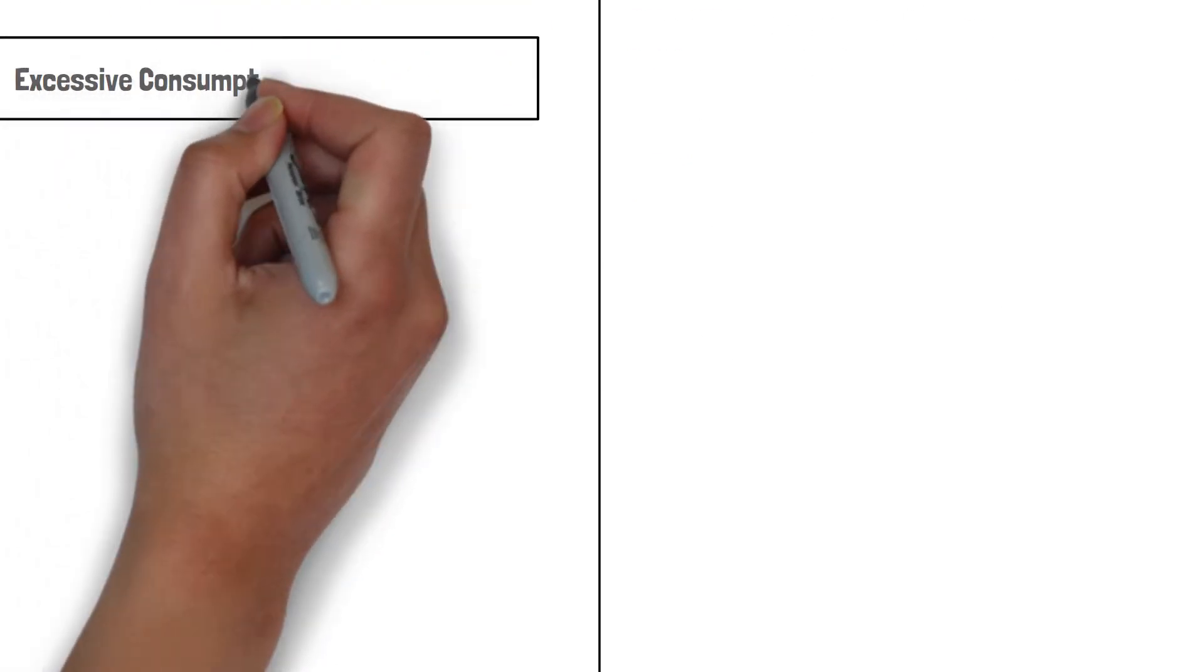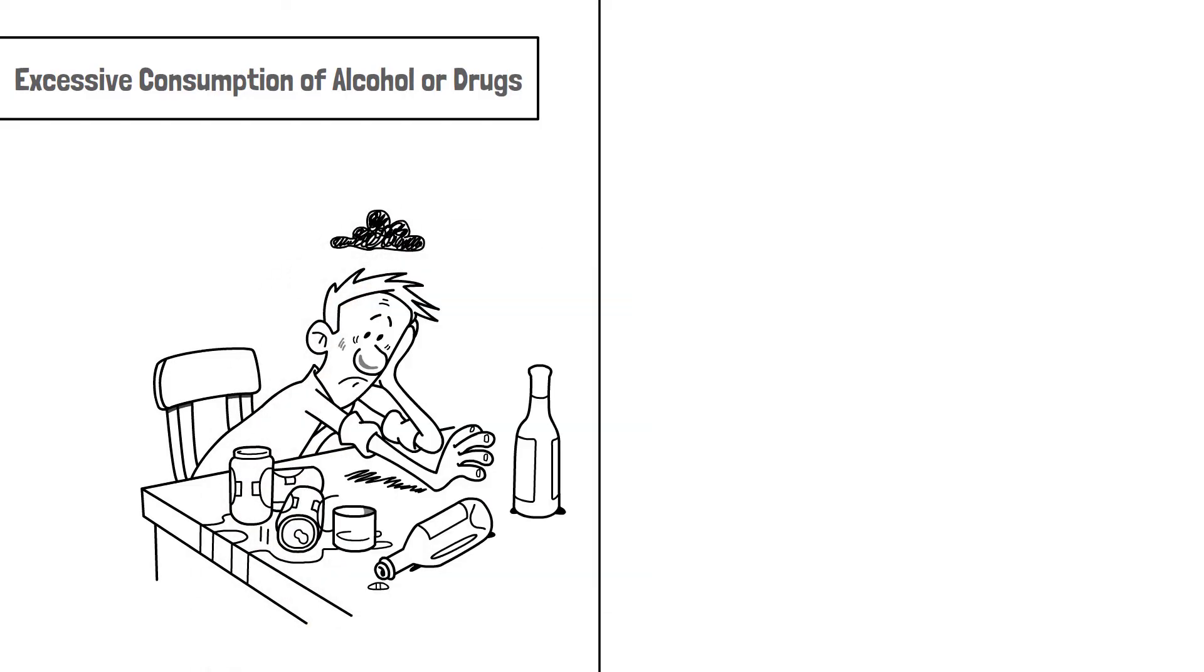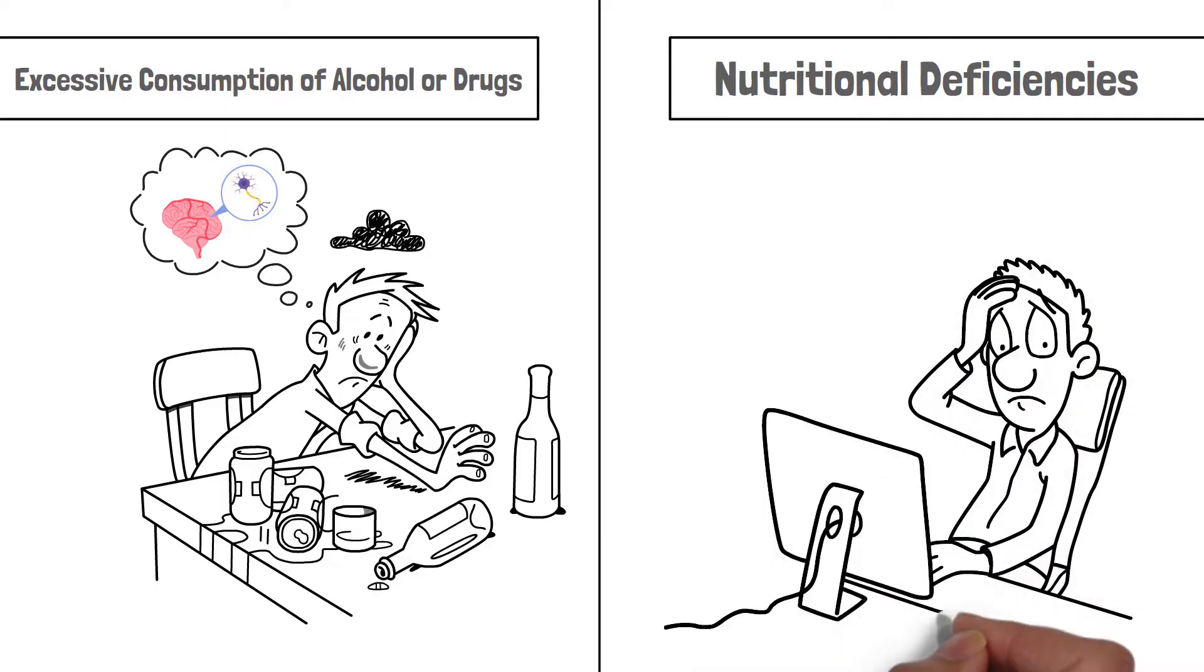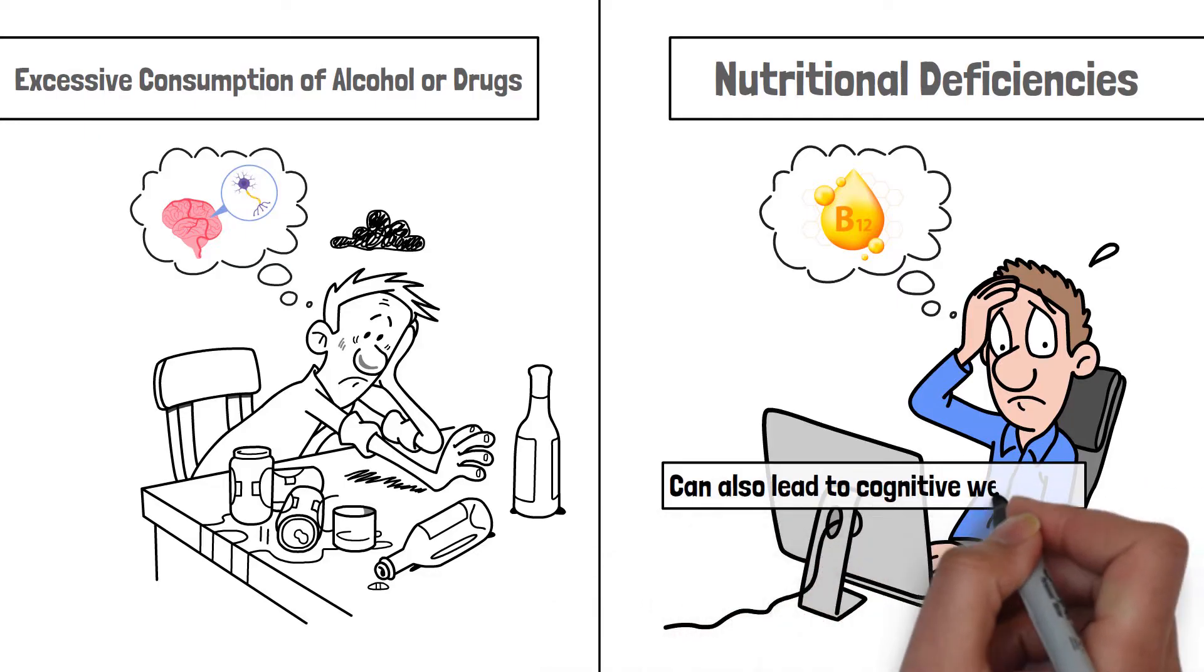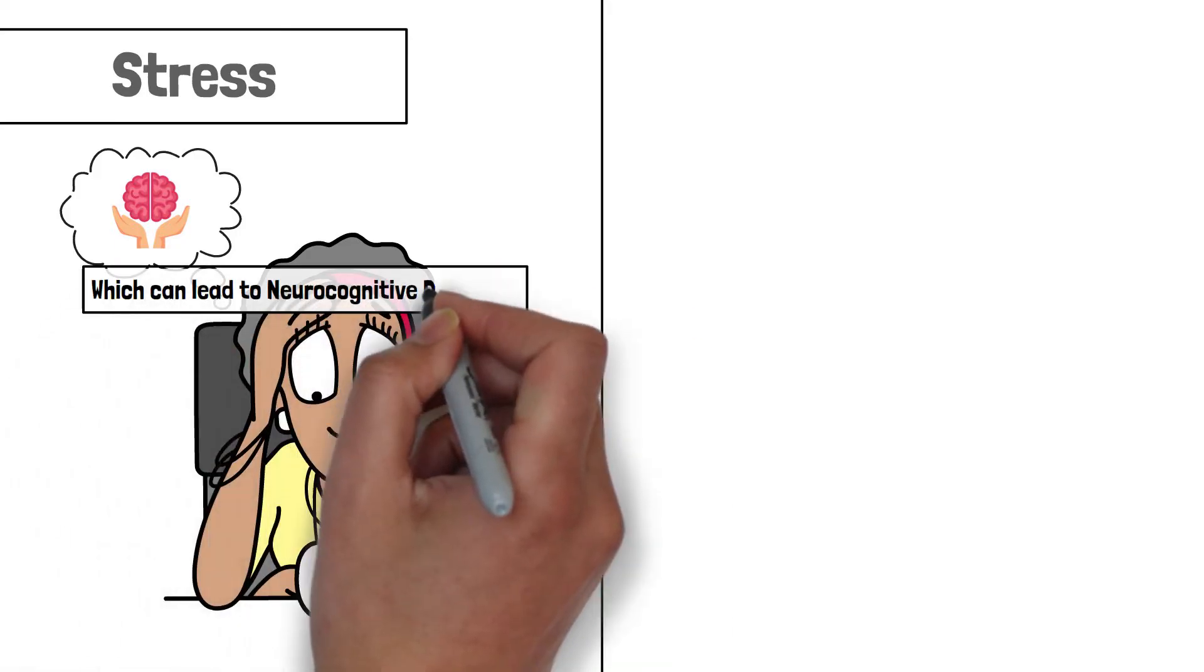Excessive consumption of alcohol or drugs. Habits of drinking alcohol or drug abuse also damage the brain, which can give rise to cognitive disorders. Nutritional deficiencies. A lack of essential nutrients, such as vitamin B12 deficiency, can also lead to cognitive weakness. Stress. Prolonged stress or depression also negatively affects the brain, which can lead to neurocognitive disorders.